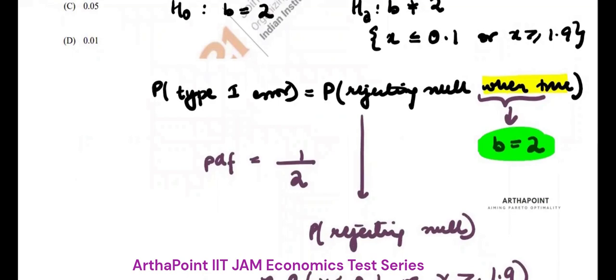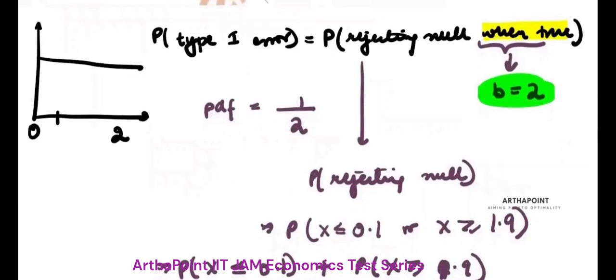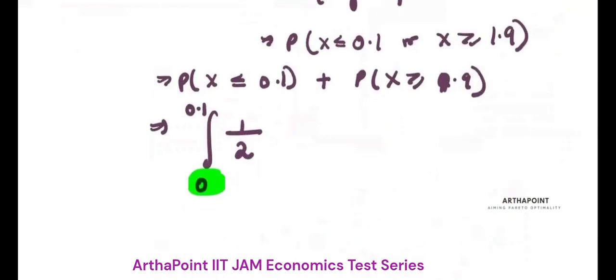So my range is from 0 to 2. It's like this: from 0 to 2. It's a uniformly distributed function. And I am rejecting it when it is either less than 0.1 or it is greater than 1.9, this part. Plus from 1.9 to 2 because maximum value can be 2.